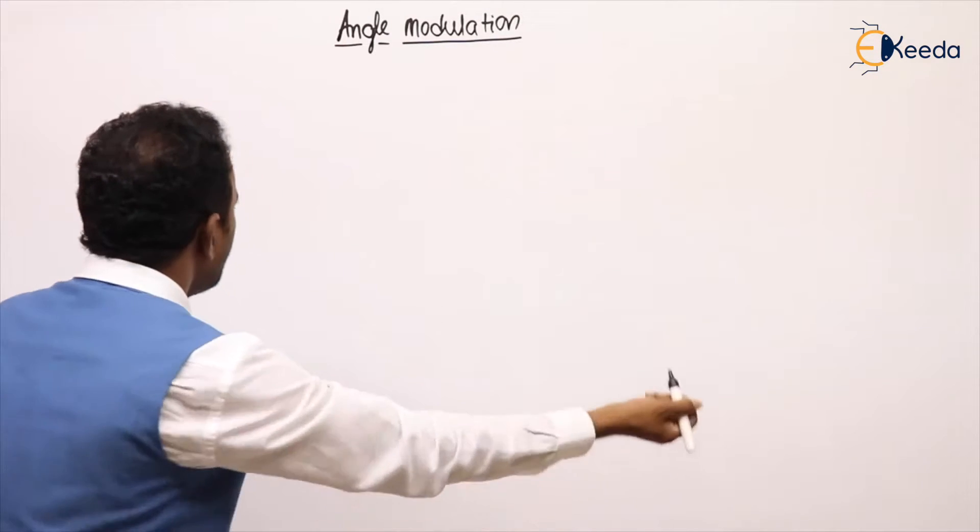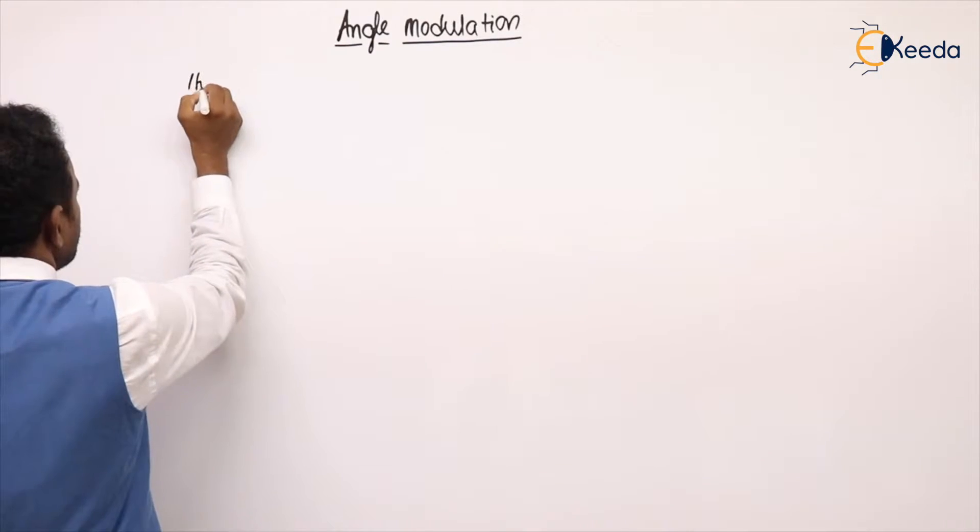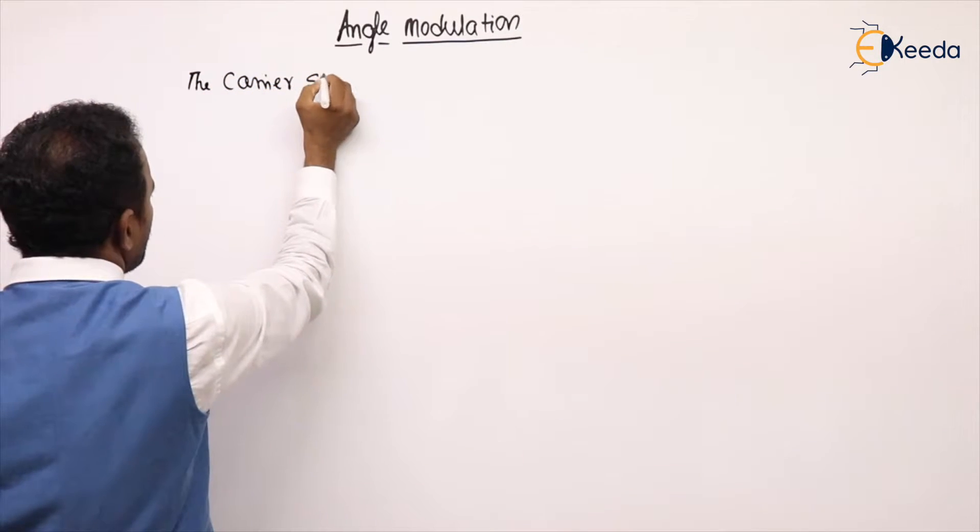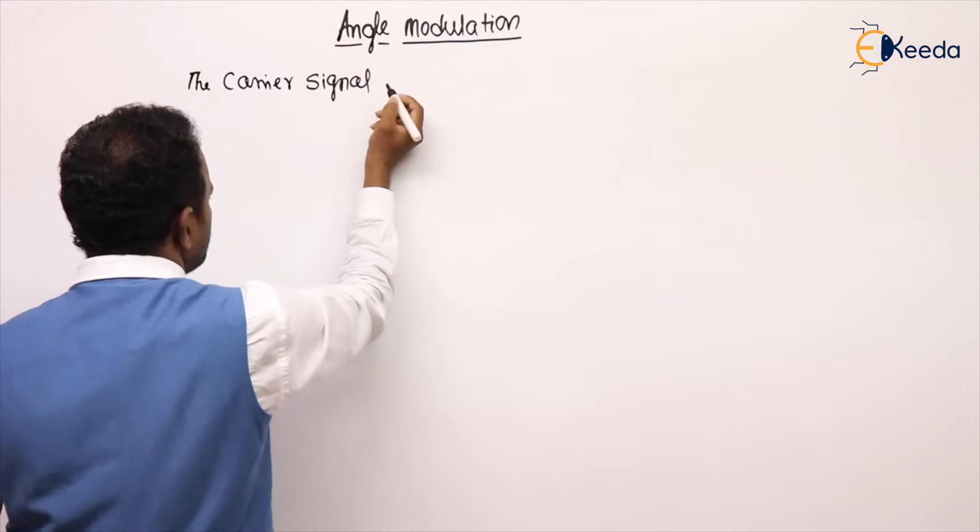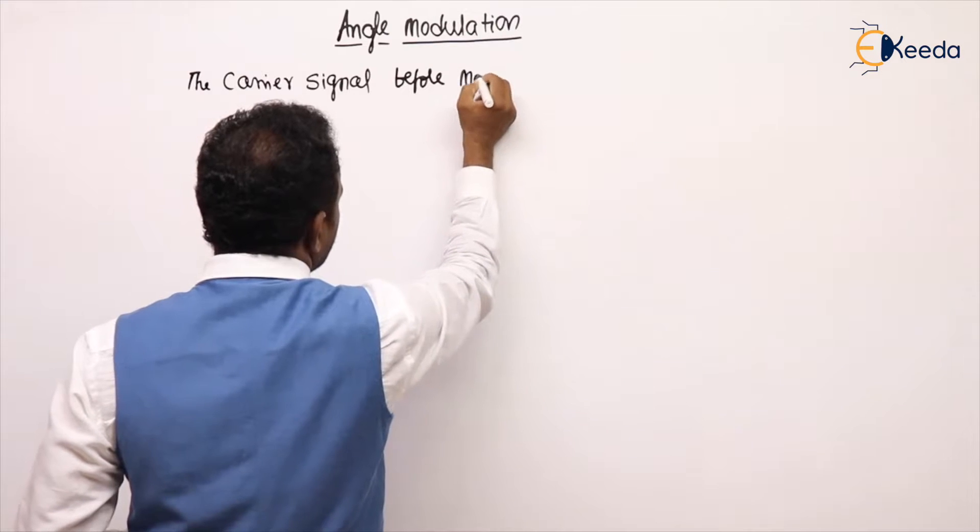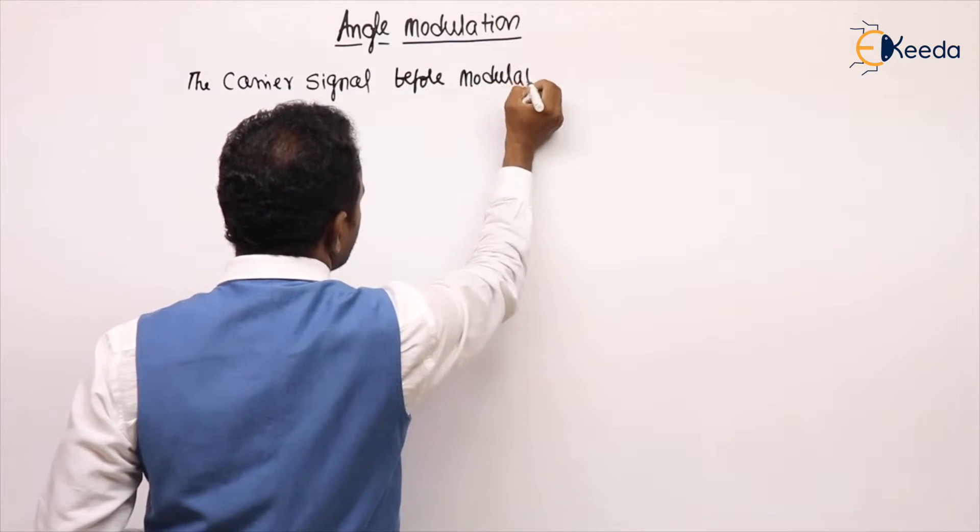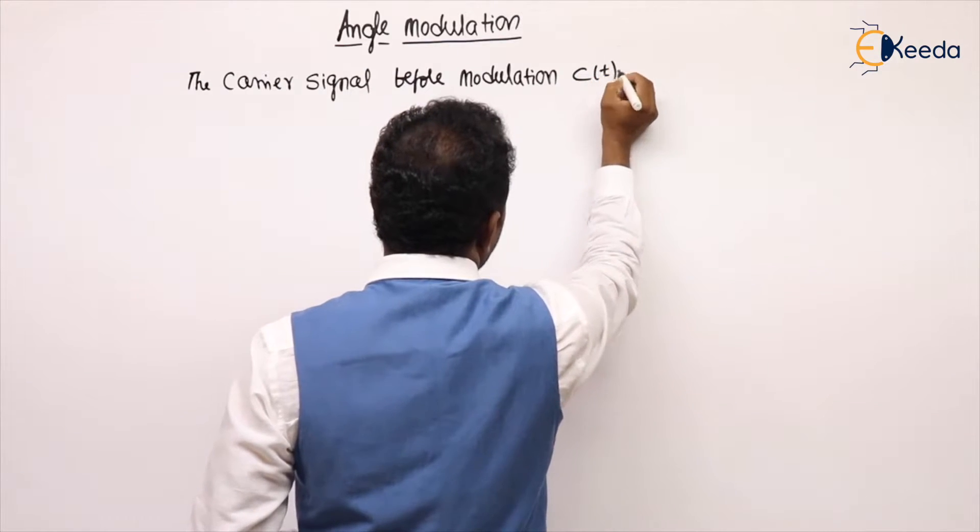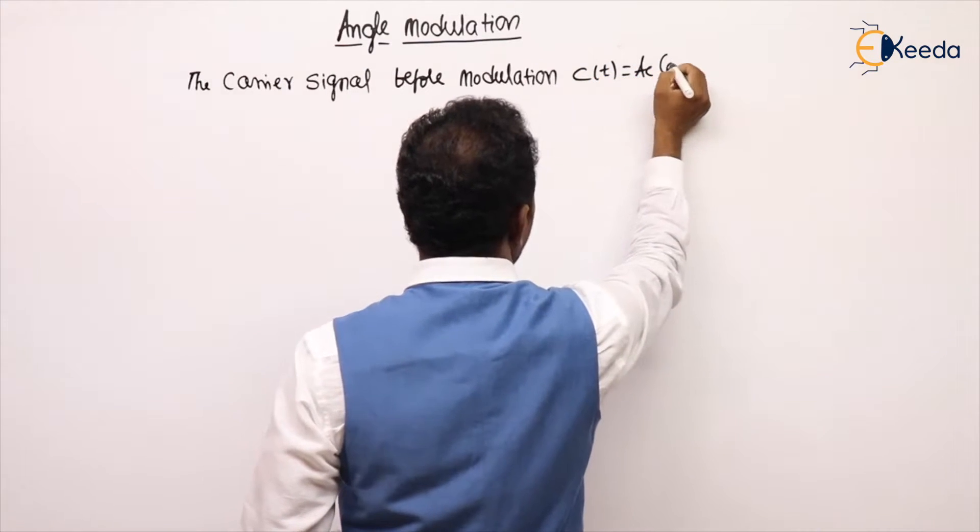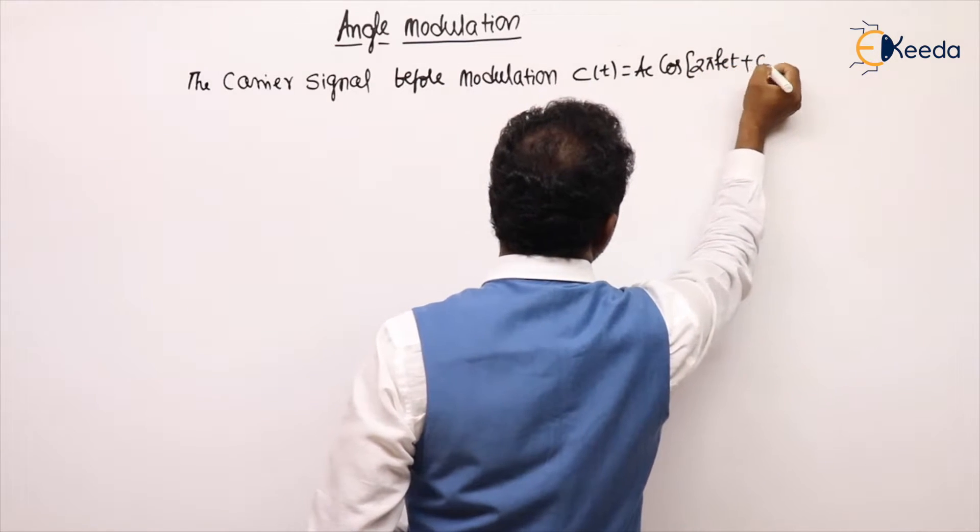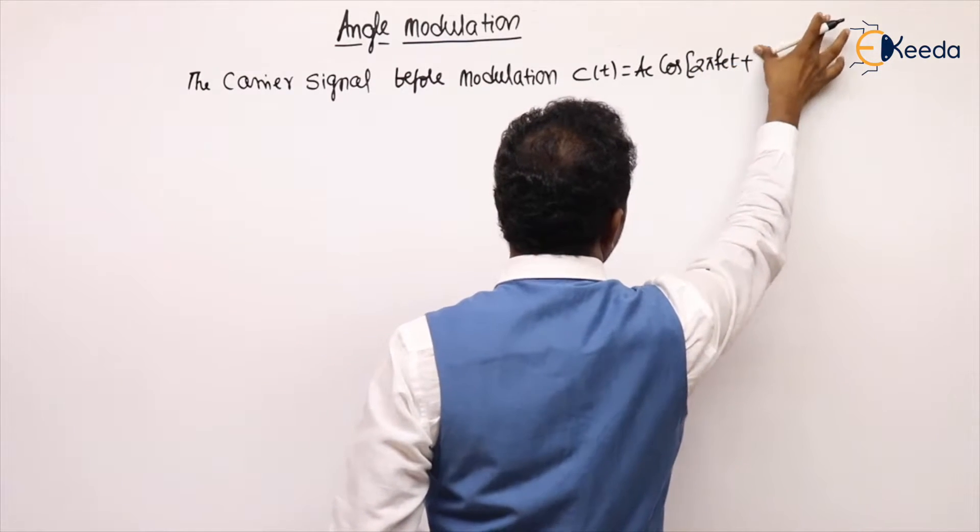Now, let us see, I am writing the carrier signal before modulation. What is the carrier strength? C(t) = Ac cos(2πfct + φ). Let us take phase.